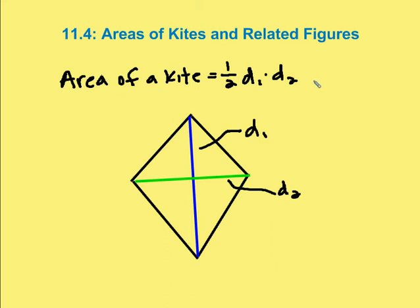In lesson 11.4, we learned that the area of a kite is equal to half of the product of the diagonals.